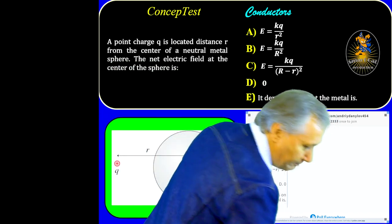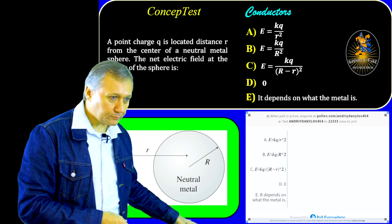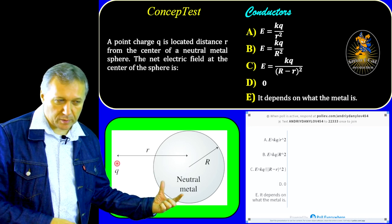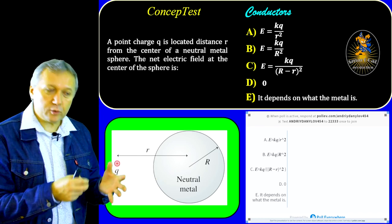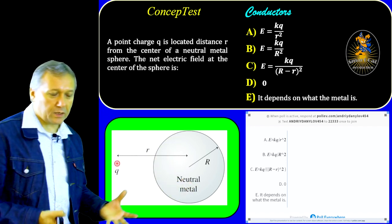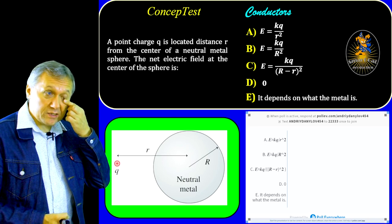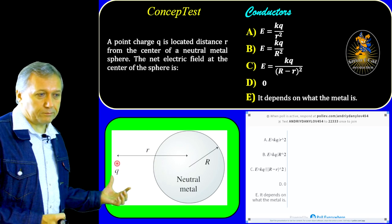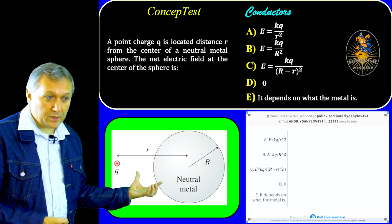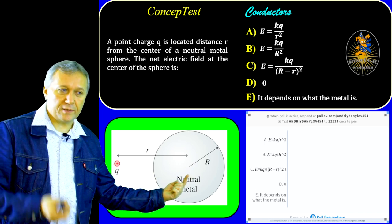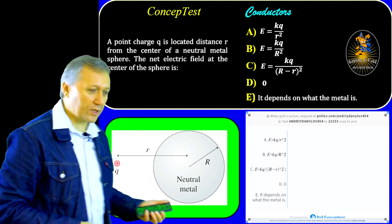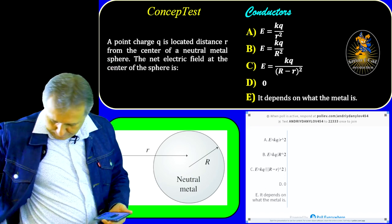Now let's answer this question. We have a metal sphere which is electrically neutral — it doesn't have an excess charge, but it has equal amounts of positive and negative charges. Then let's take a positive point charge q and position it at distance r from the center of the sphere. The radius of the sphere is also given as R. What will be the value of the net electric field at the center of this sphere? You see the options A, B, C, D, E.